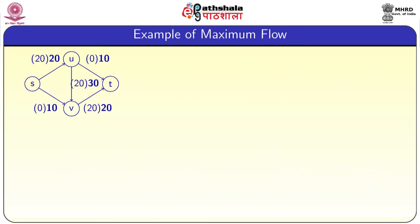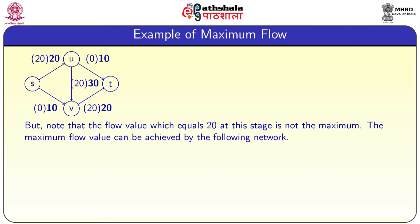In this example, the flow value from s to u is 20 — the maximum capacity is also 20. The inflow to u is 20 and outflow from u is also 20: 0 flow goes from u to t and 20 flow goes from u to v. The total flow reaching t is 20. But note that the flow value of 20 at this stage is not the maximum.